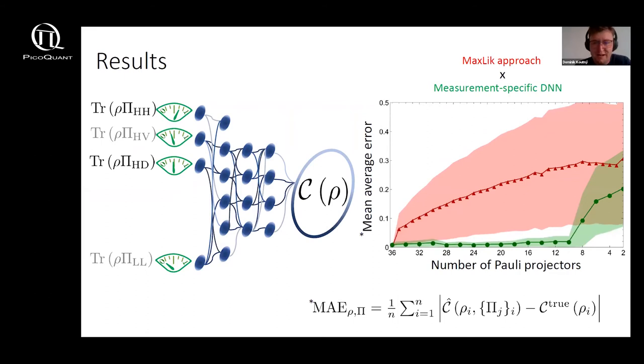So now finally some of the results. We trained in total 18 deep neural networks each one inferring the concurrence but from a variable number of probabilities at the input ranging from full tomography which is all 36 projectors down to only two.